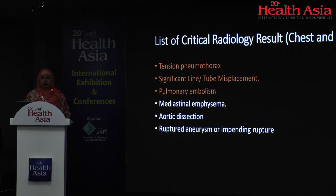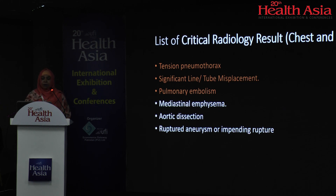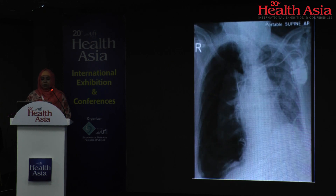This is a list of critical findings related to chest and CVS. It can be tension pneumothorax, significant line and tube misplacement, pulmonary embolism, mediastinal emphysema, aortic dissection, and ruptured or impending rupture of aneurysm.